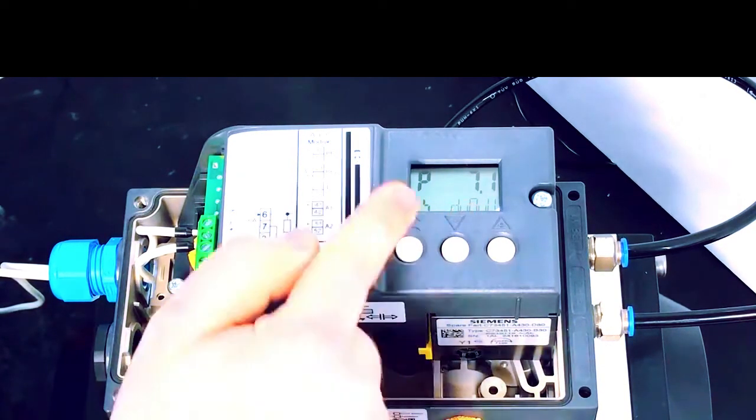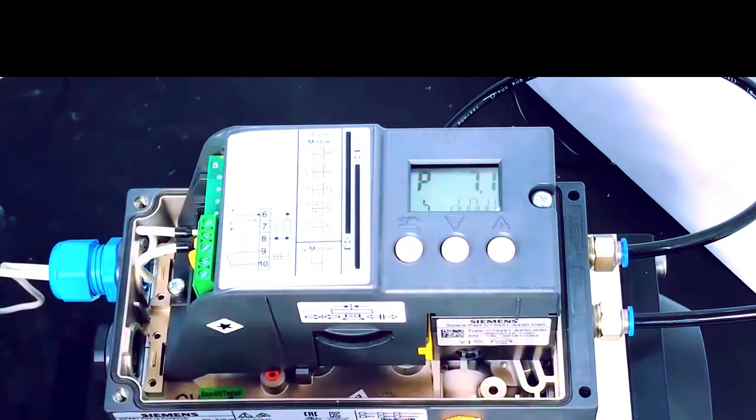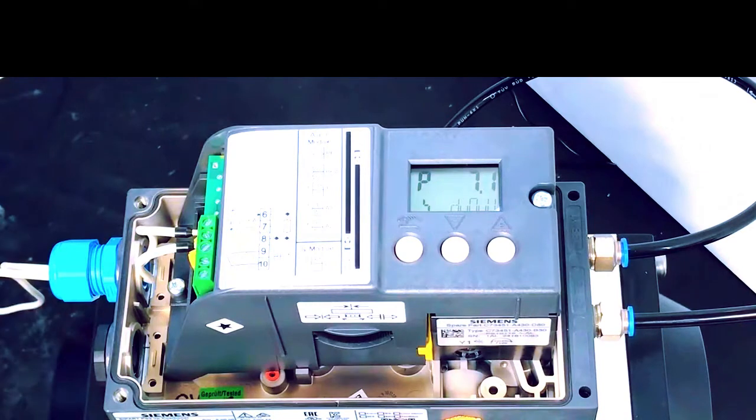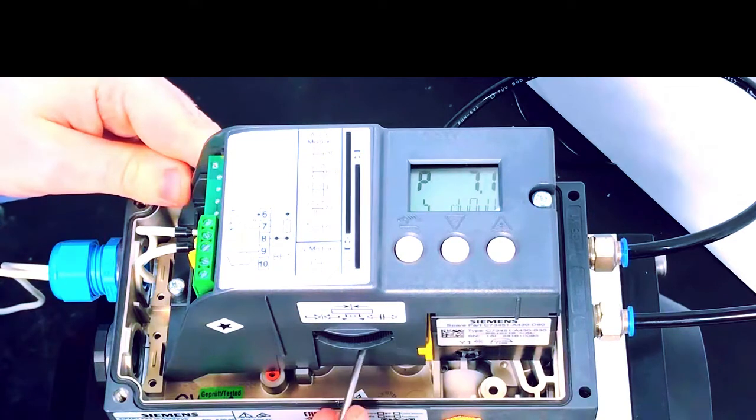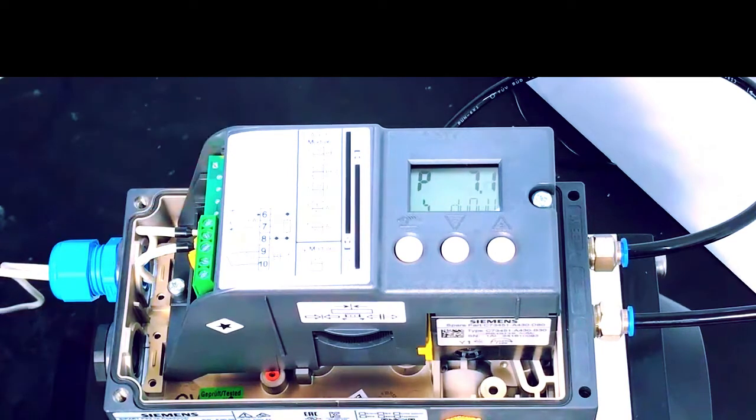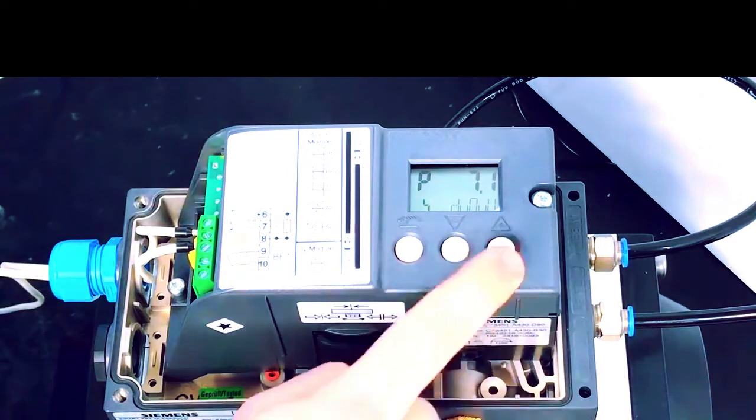When it's in the center you'll also have a position readout which is somewhere between 5 and 10. It doesn't have to be exact, close is good enough. Once we've done that we simply retighten the clutch, which is the small yellow tab, and now we press the plus button to continue through commissioning.